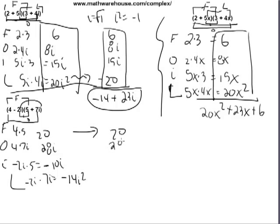So this is 20, this is 28i, negative 10i. And just remember, i squared is really the same as the number negative 1. So, it's really negative 14 times negative 1, or positive 14.